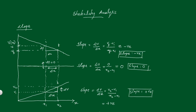So for a positive slope, v(x) is increasing with respect to x. For a zero slope, v(x) is not increasing or decreasing with respect to x. And for a negative slope, v(x) is decreasing with respect to increasing x. These ideas will help you understand stable and unstable equilibrium conditions.